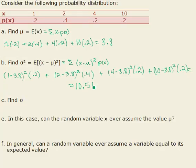And then c is just one step further finding sigma which is our standard deviation. Well that is the square root of sigma squared or the square root of 10.56. In this case it's about 3.2496, we can go out four decimal places.